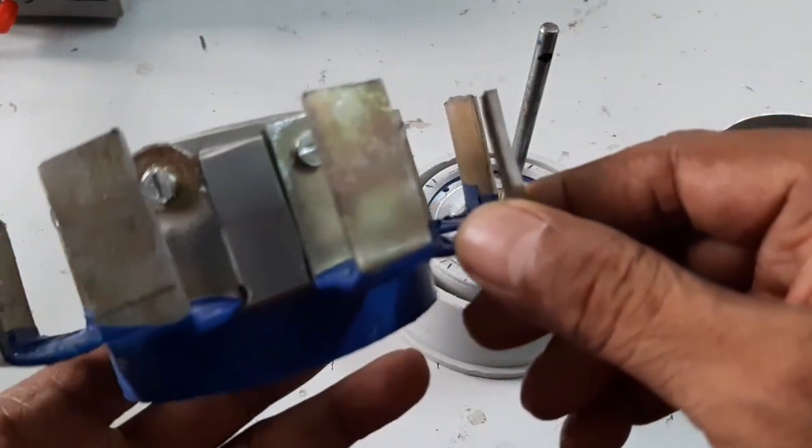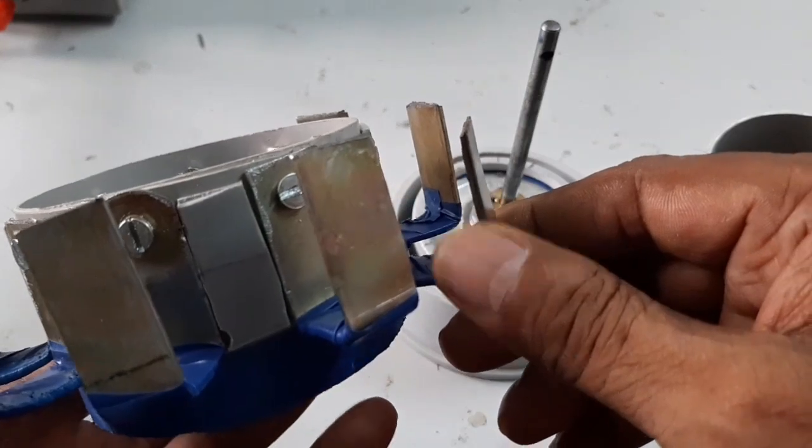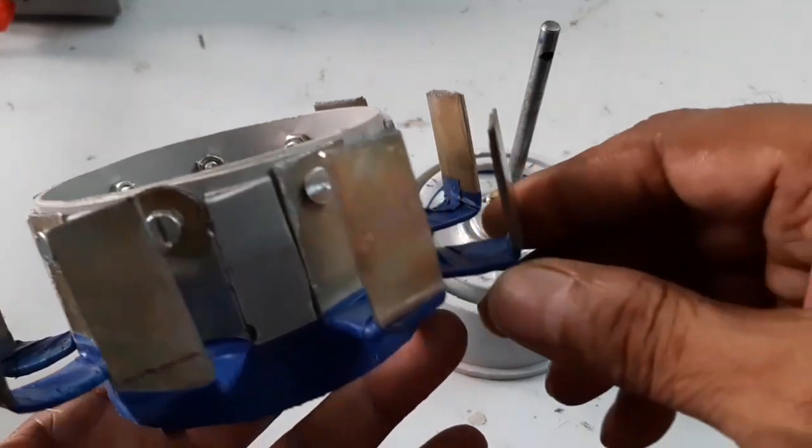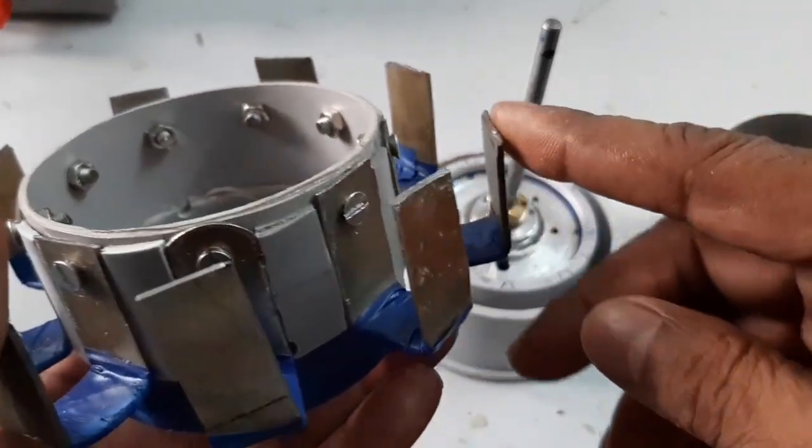The electromagnet is in U-shape. That means it interacts both sides of the rotor magnets.